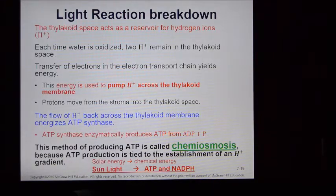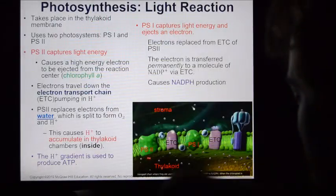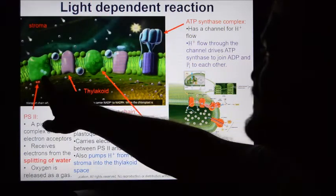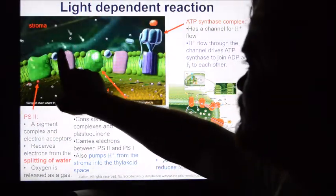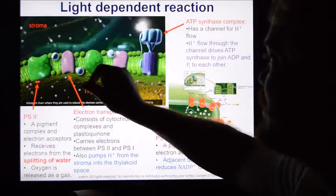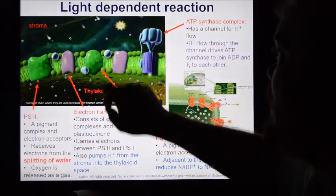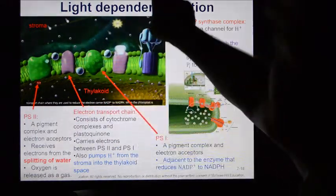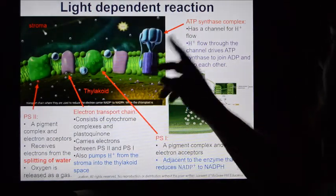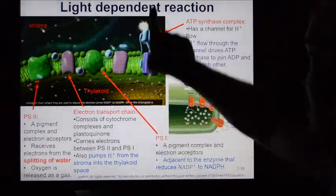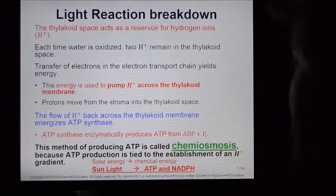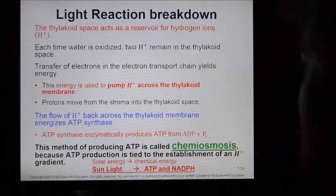That is the light-dependent reaction in a nutshell. Photosystem II energizes electrons, which move into the electron transport chain to pump hydrogen into the thylakoid. Photosystem I gets those electrons, re-energizes them, and they're used to make NADPH. The hydrogen pumped into the thylakoid leaves via ATP synthase and makes ATP. What comes out of the light-dependent reaction? NADPH and ATP. That's it.